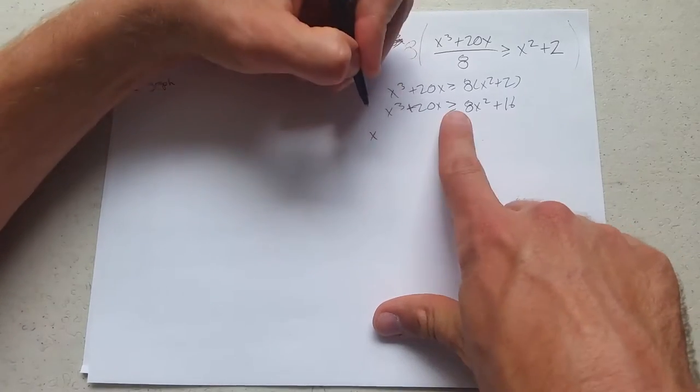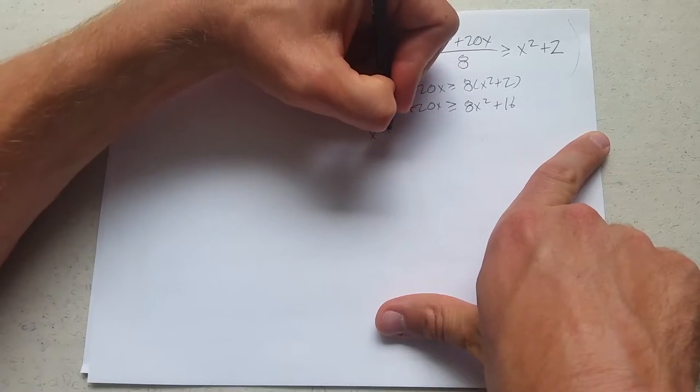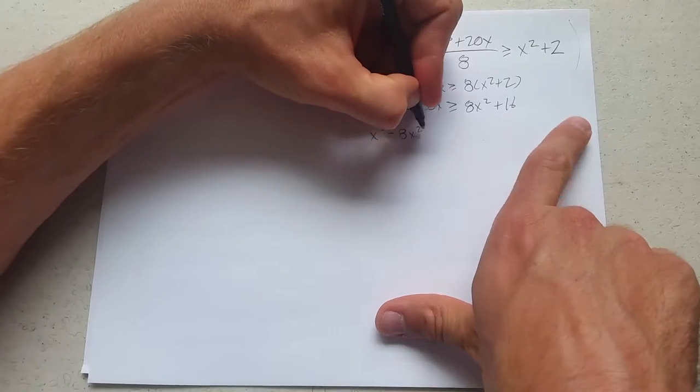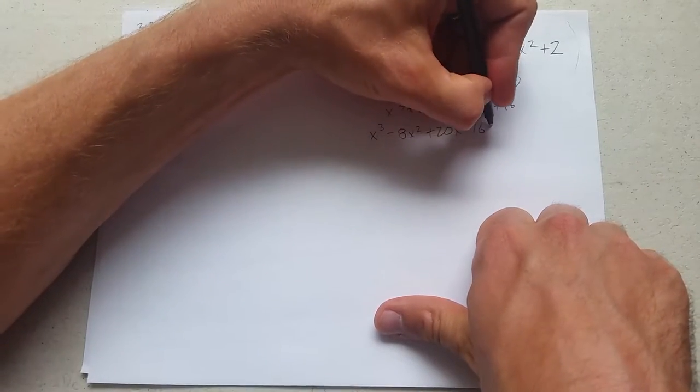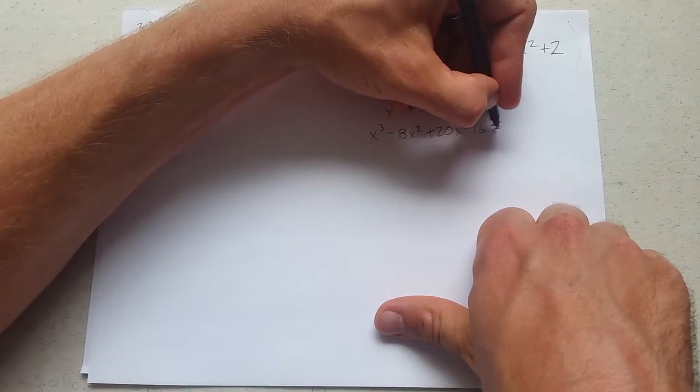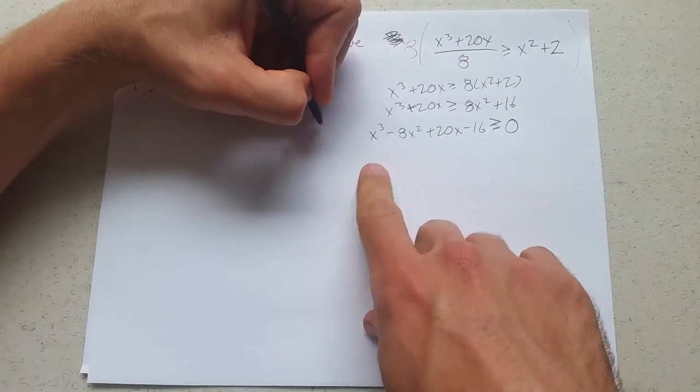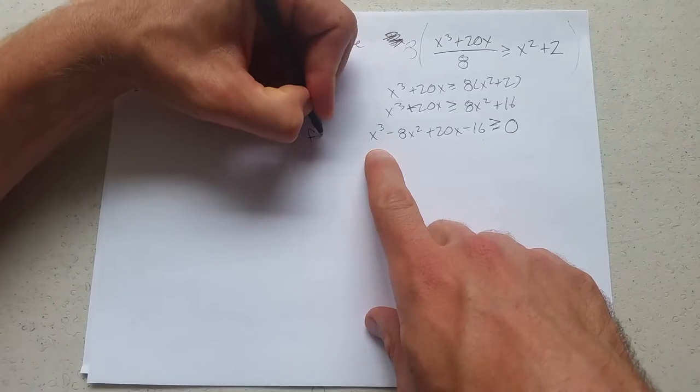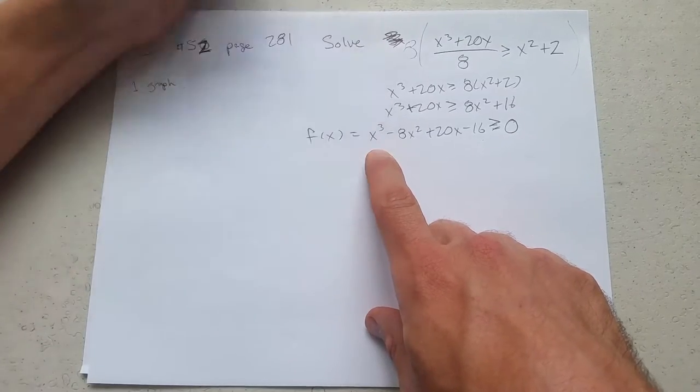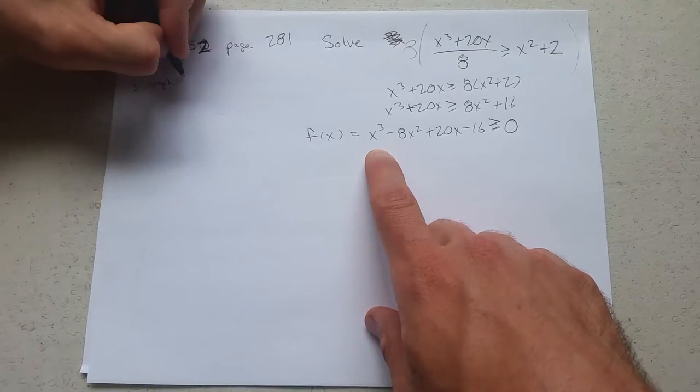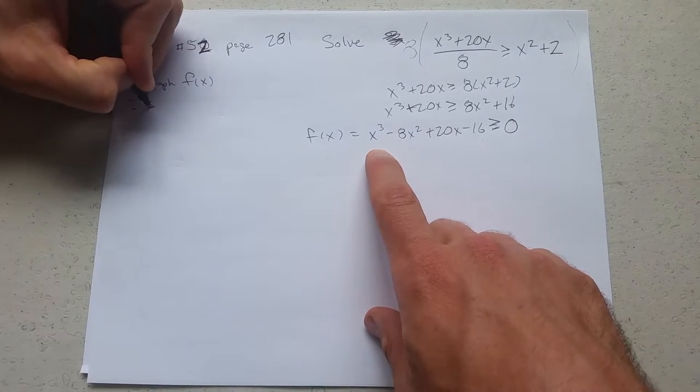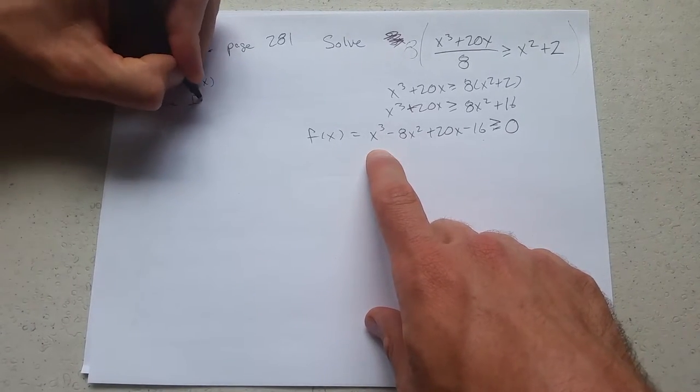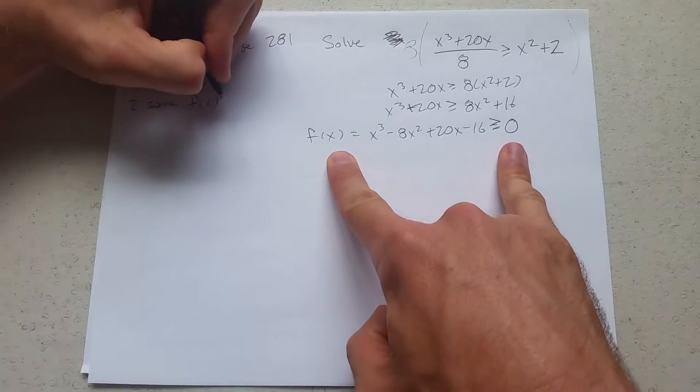Now adding, subtracting does not flip inequalities. So we're going to have x cubed minus 8x squared plus 20x minus 16 is greater than or equal to 0. I'm going to give this a name and we're going to call it f of x. So I'm going to graph f of x and then solve f of x greater than or equal to 0.